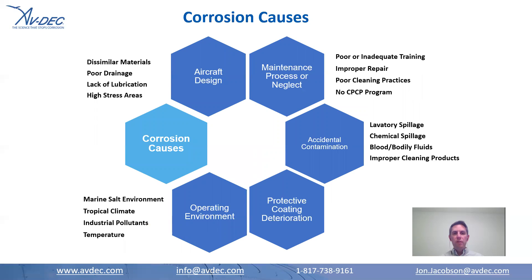Here are some of the common corrosion causes. It could be your aircraft design — possibly dissimilar materials, the anode and cathode material we talked about, poor drainage, or lack of lubrication. Maybe it's your maintenance process — no formal CPC program, an improper repair, or inadequate training. You could have accidental contamination, maybe a blue juice spill in your lavatory or a chemical spill. If you're flying around fish in your cargo area, some of that salt water is going to be highly corrosive. And then a big one is protective coating deterioration — once you get degradation in your top coats and primers, there's a good chance corrosion is going to start.